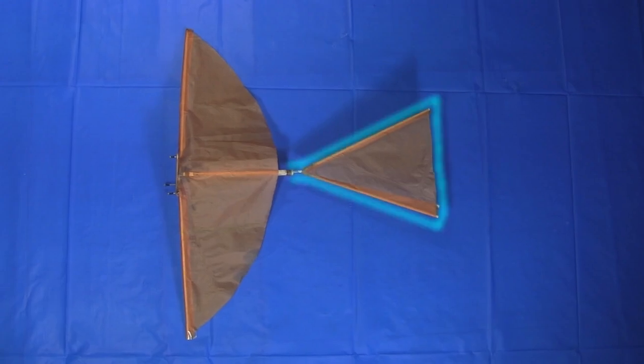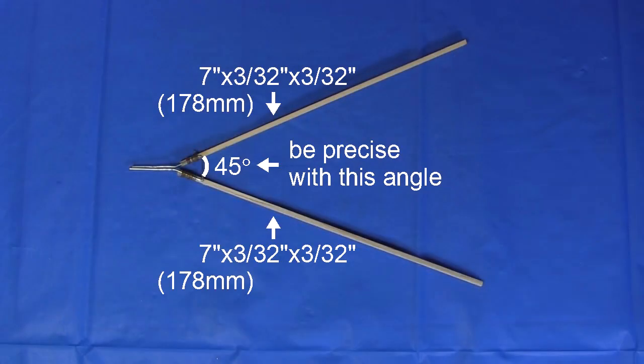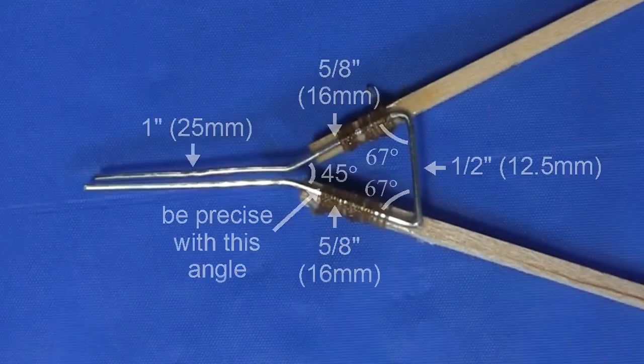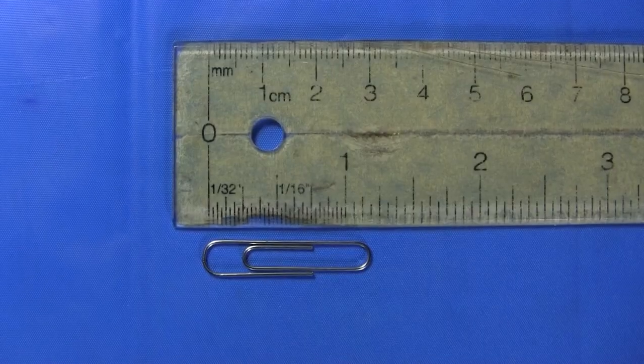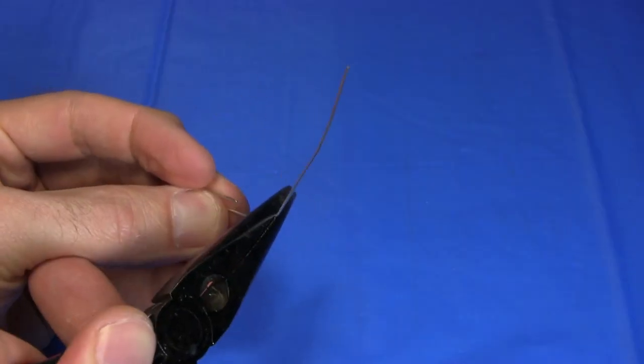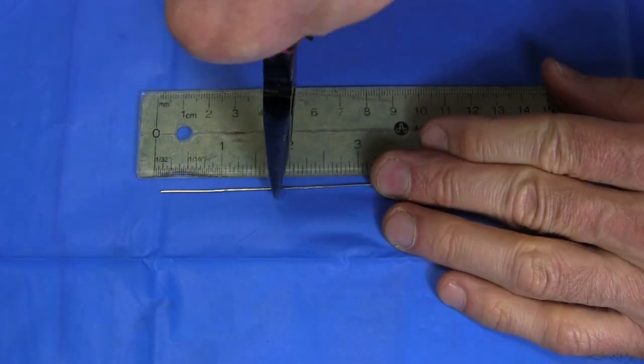The ornithopter has this tail on the back. The tail is made up of two pieces of balsa wood forming a triangle, with some wire to hold it together. For the wire, I'm using a small paper clip. Small since it's lightweight, and we don't need a lot of strength here.